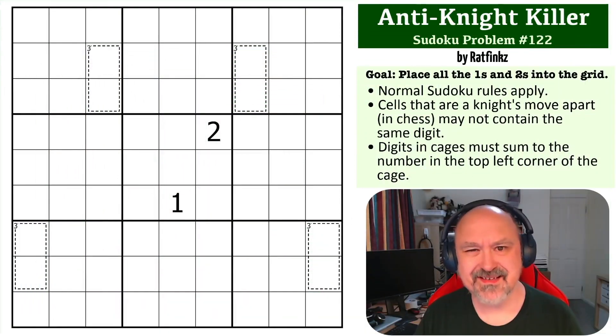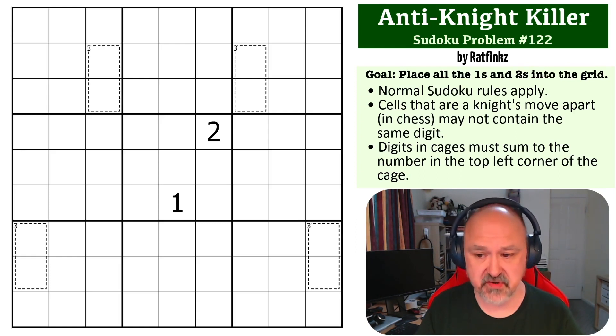Hey everyone, this is Bremster and this is number 122 in the Sudoku problem series. This is an anti-knight killer problem, and similar to yesterday's problem this one has a global constraint, the anti-knight constraint. The goal on this one is to place all of the ones and twos into the grid, and there is a link below in the description where you can get a copy of this grid so you can try it out yourself.